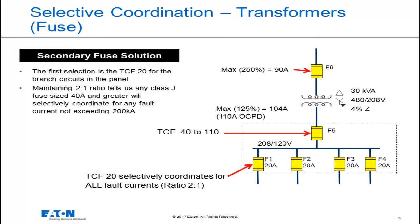The first fuses we select are the branch fuses downstream of the transformer, F1 through F4. These devices are typically selected based upon the loads they supply and will be our given starting point. We select the largest device in the panel branch feeder location and ensure selectivity with the upstream devices — anything smaller will selectively coordinate. The largest in this example is 20 amps. The main fuse in this panel, fuse F5, can be anything from a 40 amp to a 110 amp fuse based on the ratio tables.